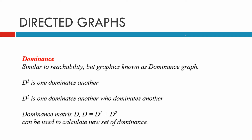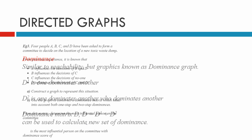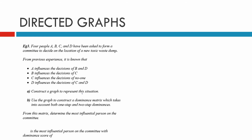Dominance is the next topic. It's similar to reachability, but the graph is known as a dominance graph. D1 is when one node dominates another directly. D2 is when one dominates another who dominates a third. The total dominance matrix is D1 plus D2.